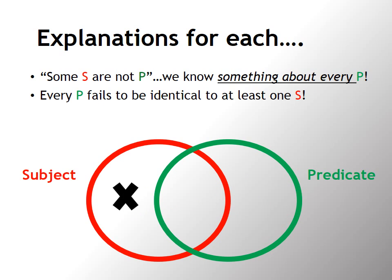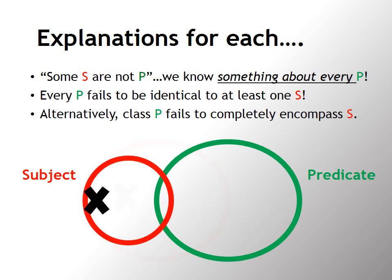Now, let's talk about the most difficult case, the O sentences. Some S are not P. We do know something about every P from that sentence. Every P fails to be identical to at least one S. Now, that may sound a little bit pedantic, but it's actually an important point, and I'll explain that. Alternatively, you could think about it as class P fails to completely encompass S.